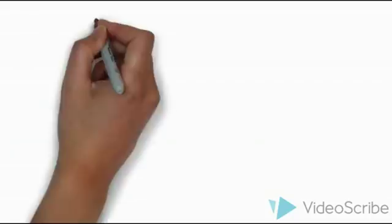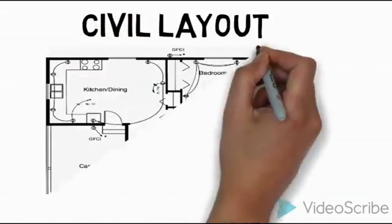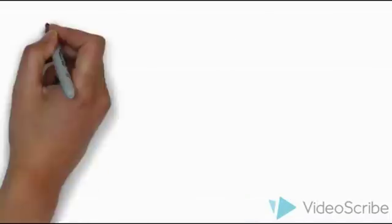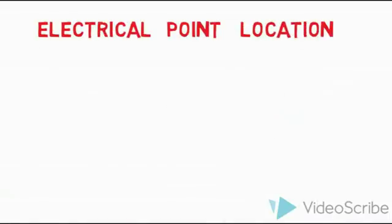Civil layout is a building plan. This is the building, which includes the kitchen, bedroom, hall, and living area.